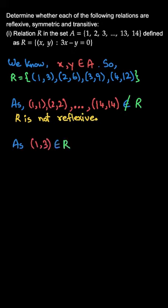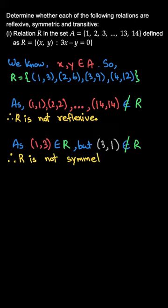And for (1, 3) belong to A, we do not have (3, 1), therefore R is not symmetric. Because remember what the symmetric says: if you have (a, b) in your relation, in your set, you should have (b, a). Whereas here we have (1, 3) but we do not have (3, 1).